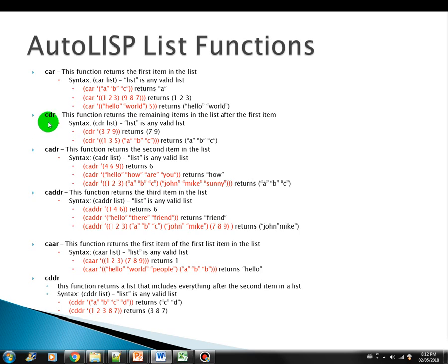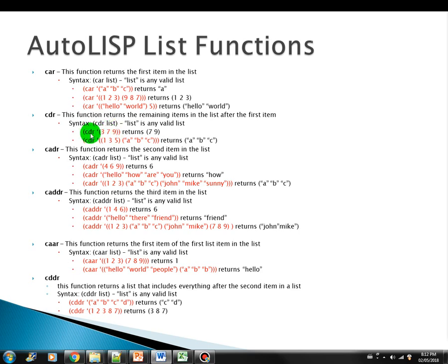The next one is the CDR function. This function returns the remaining items in the list after the first item. While car returns the first one, CDR returns everything in the list after the first element. So in this example here, we have a list of three, seven, nine. We issue CDR and it gives us seven and nine — these two.